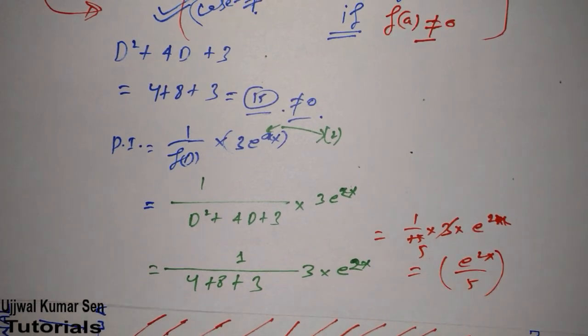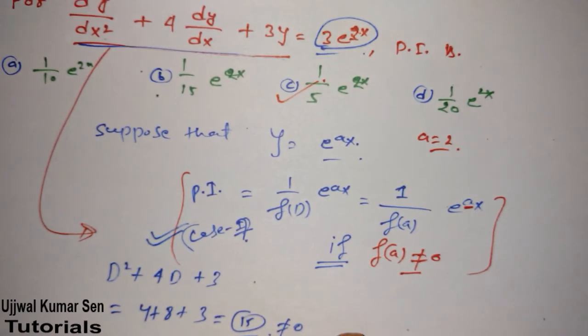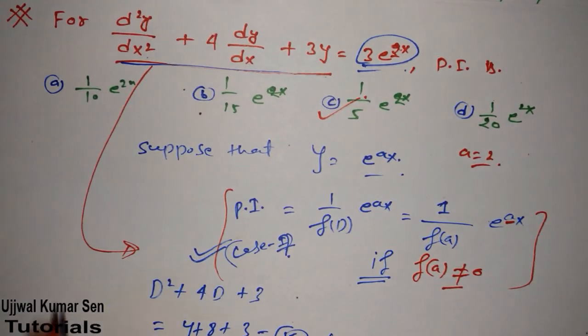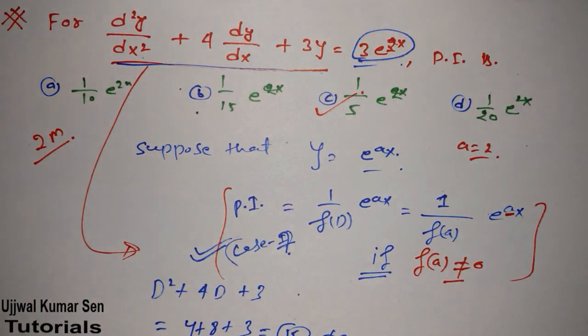E to the power 2x by 5 is the answer for this question, so option C is the right answer. This question was asked in two marks and if you practice, you will practice little bit even two or three times, you can solve this type of problem quite easily.